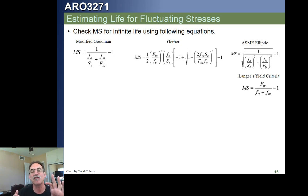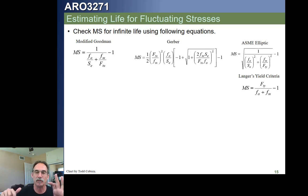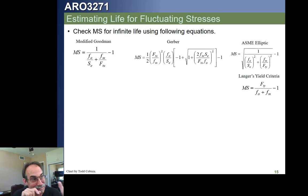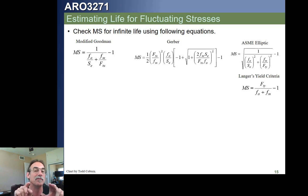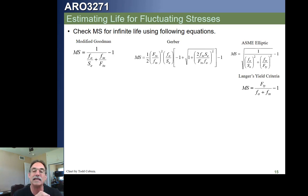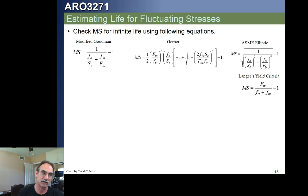Now that we know we've got a negative margin for infinite life, we need to characterize our stresses so we can predict how many cycles we need to be good for. If you think back, we have the whole SN curve — not just infinite life but low-cycle and high-cycle fatigue. But remember, all the data and curve fitting was based on a fully reversed stress level. So we need to convert our fluctuating stress into an equivalent fully reversed stress.